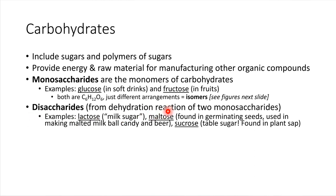Another example of a disaccharide is maltose, a sugar found in seeds that are germinating. It's used for making malted milk ball candies and also in the process of making beer. A third example is sucrose — the official name for table sugar used in normal baking. Sucrose comes from plant sap and is produced by plants as a natural energy store.